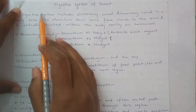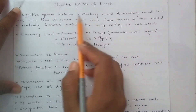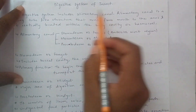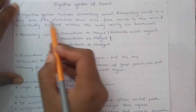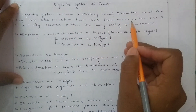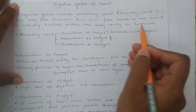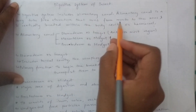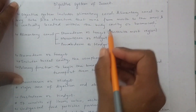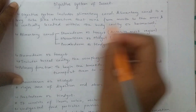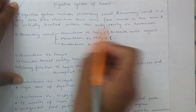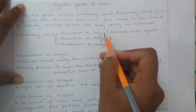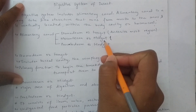Digestive system includes alimentary canal. In insects, the alimentary canal is a long tube-like structure that runs from the mouth to the anus, and it is centrally located within the body cavity. We can divide it into three parts: foregut, midgut, and hindgut.